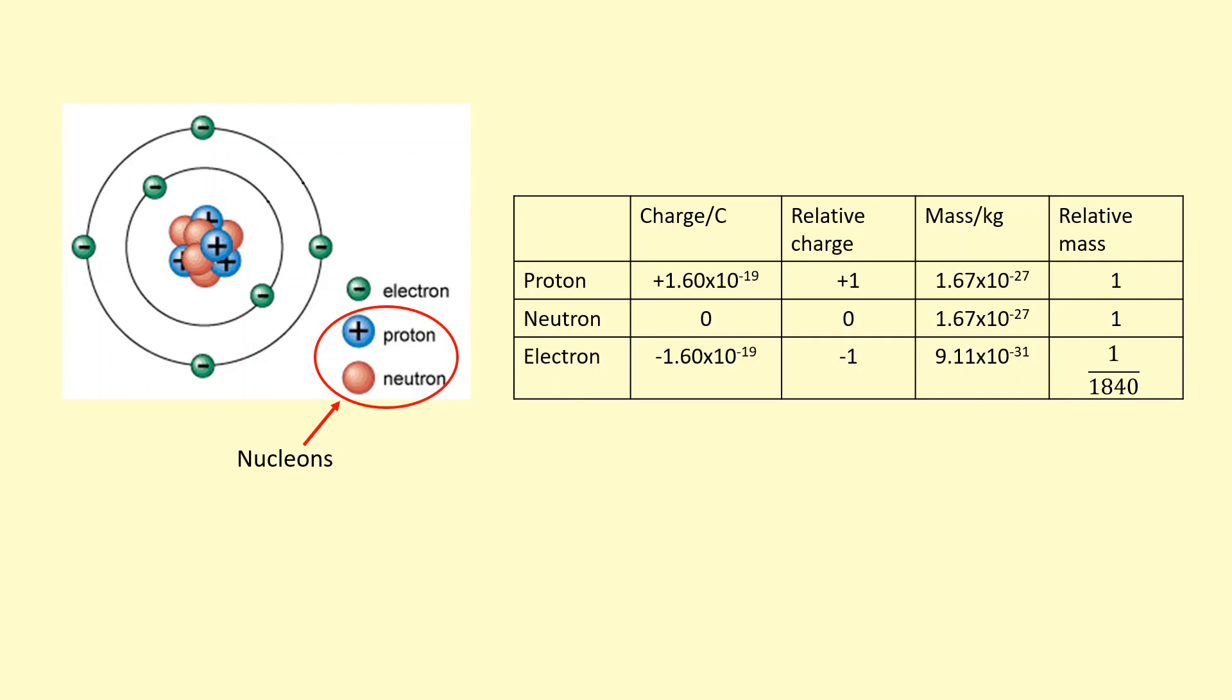So if you look at the charge of the proton and electron, they're opposites. The electron has a negative charge, while the proton has a positive charge. The neutron doesn't have any charge.